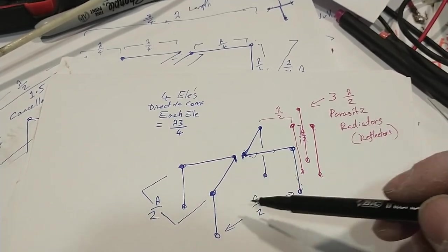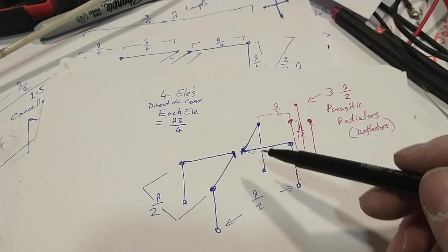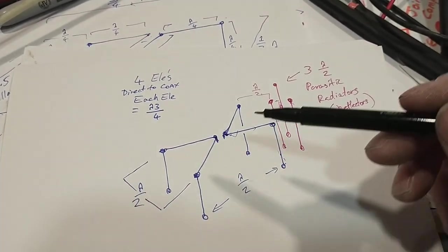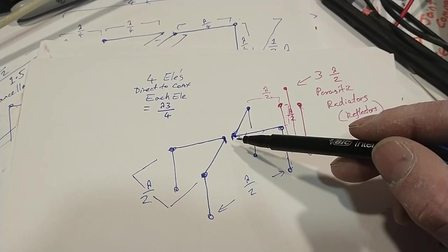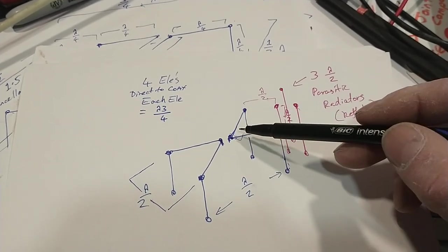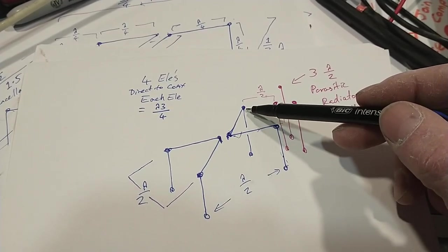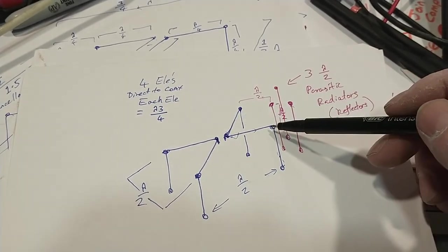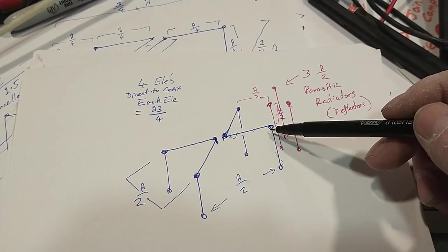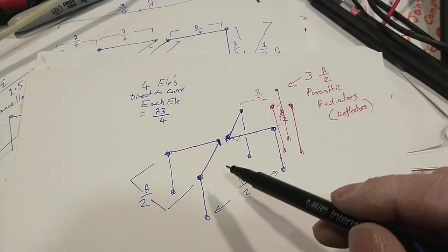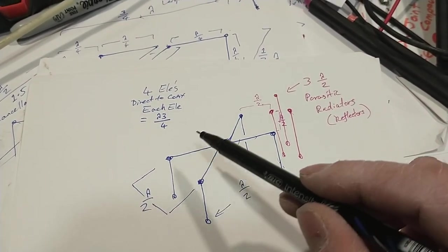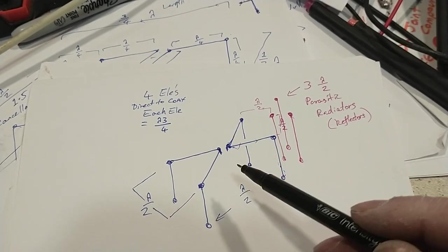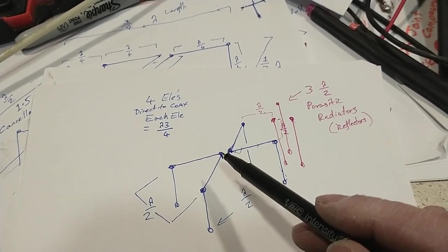This isn't drawn very well depending on how you imagine it, but looking down on it it would actually be a perfect X, so it's a perfect square from the end. The distance from here to here is a half of a wavelength in free space, as is the distance from here to here, as is from here to here, as is from here to here.